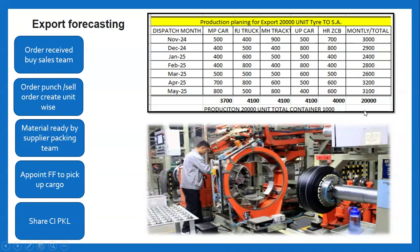A total of 20,000 tires need to be exported. For these 20,000 tires, we have classified categories: car tires, truck tires, tractor tires, car tires, and JCB tires. This order was received from overseas — specifically from South America — and we have to dispatch these 20,000 tires from different locations across India.